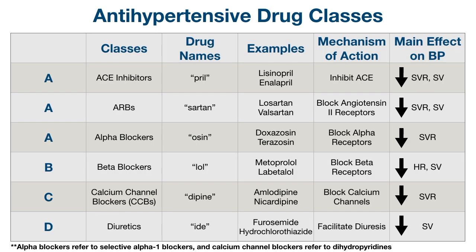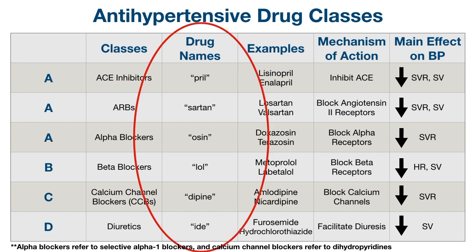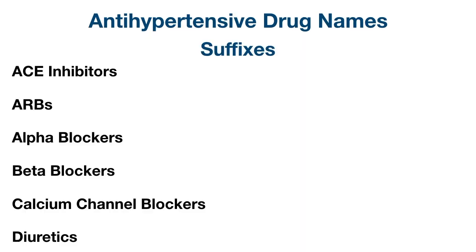Now that we've learned an easy way to remember the main classes, let's learn an easy way to remember the drug names within each class. There's a simple trick using the suffix of each medication. ACE inhibitors usually end in -pril. ARBs typically have the suffix -sartan.